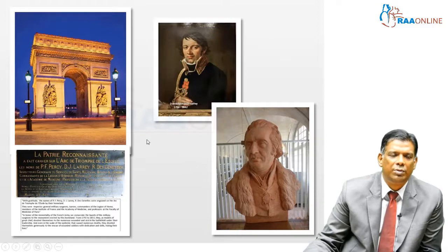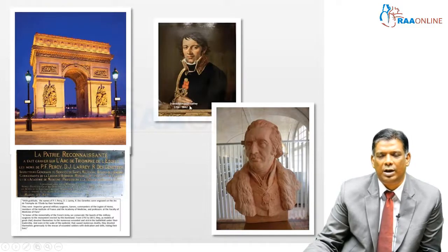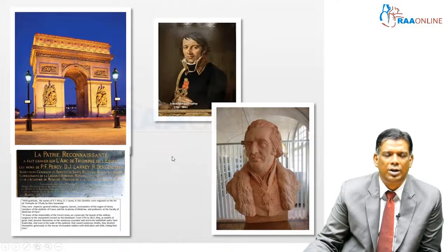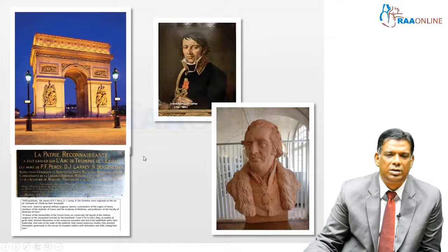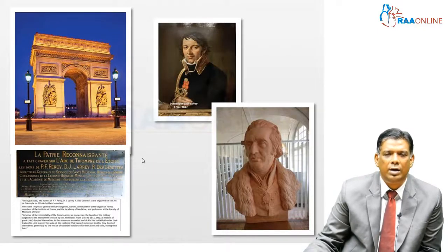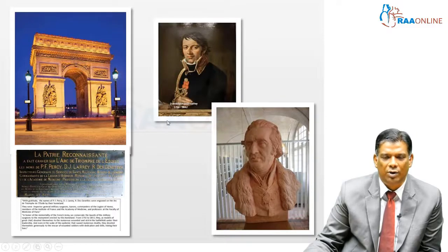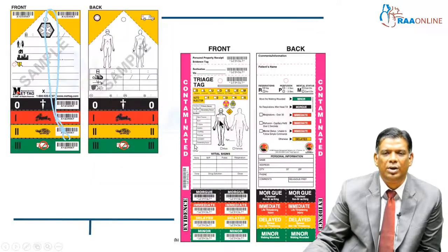Triage has been around from the time of the Napoleonic wars. This is Dominique Gelare, who was a surgeon in the French army under Napoleon, and he started the entire triage system of classifying patients based on their wounds and deciding on what to do for these patients. He is forever immortalized at the Arc de Triomphe in Paris.